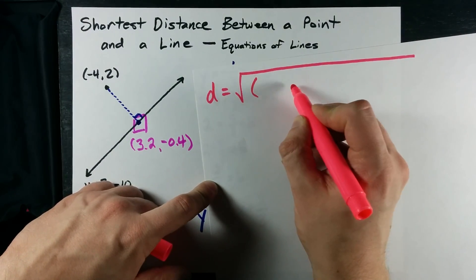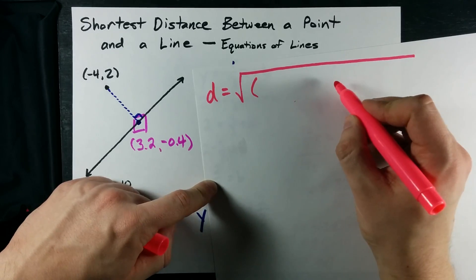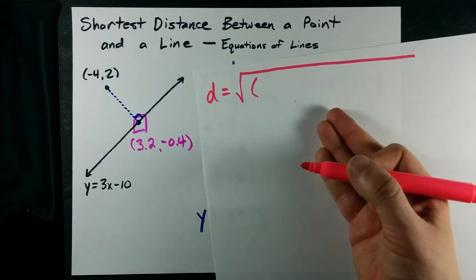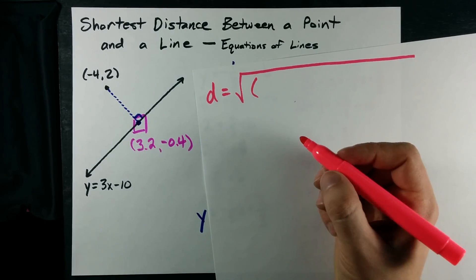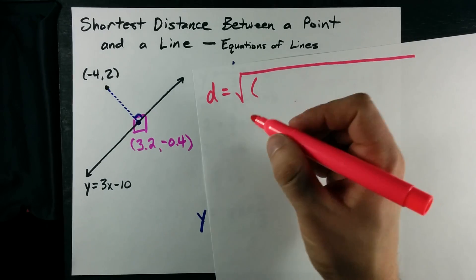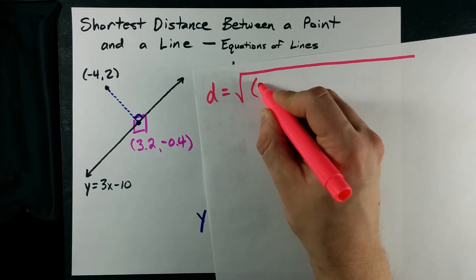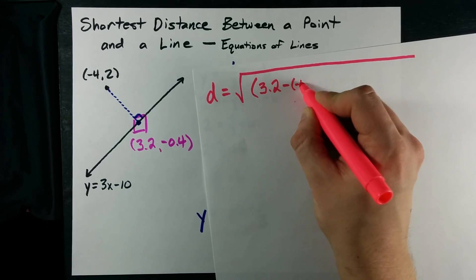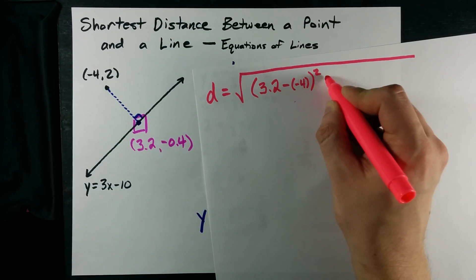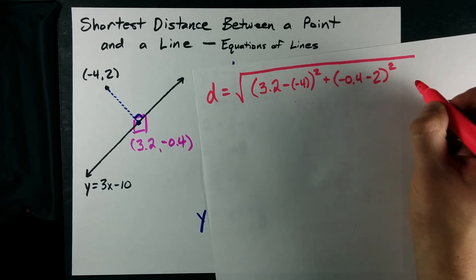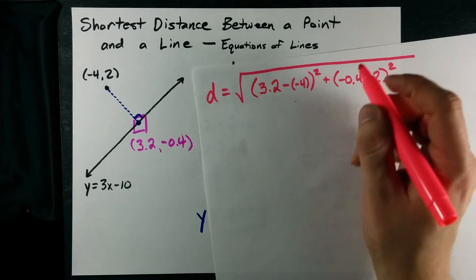That's x2 minus x1 squared plus y2 minus y1 squared. If you're in grade 10, it's probably going to be given to you. If you're beyond grade 11, you should have memorized it or use the Pythagorean theorem or whatever. x2 minus x1 all squared, y2 minus y1 all squared added together and then square rooted.